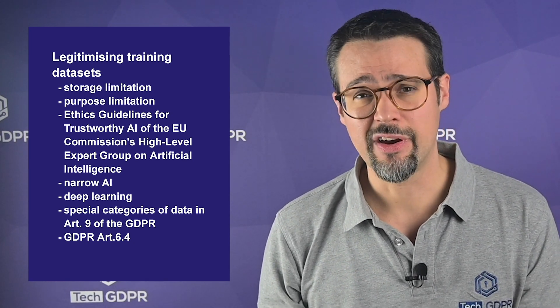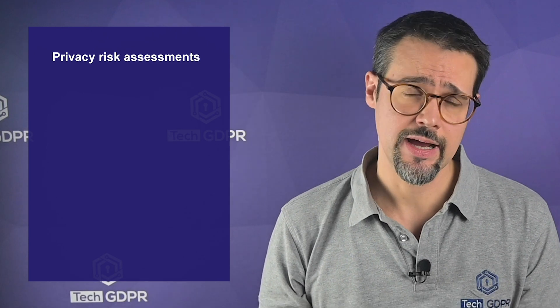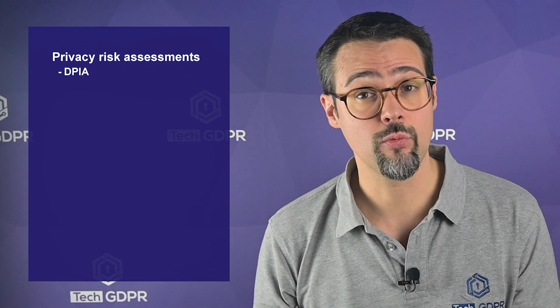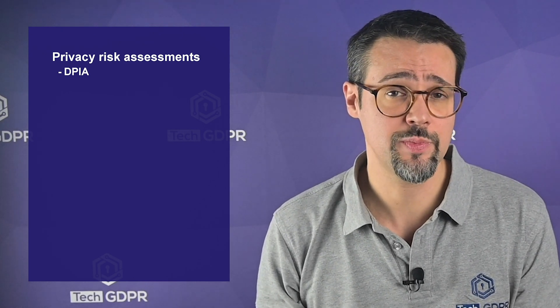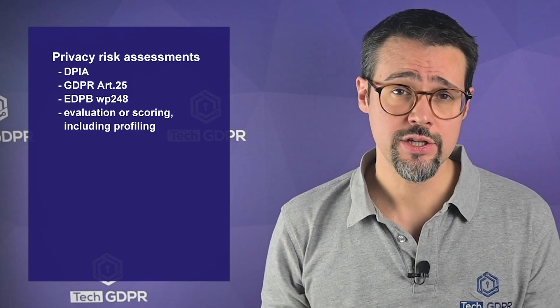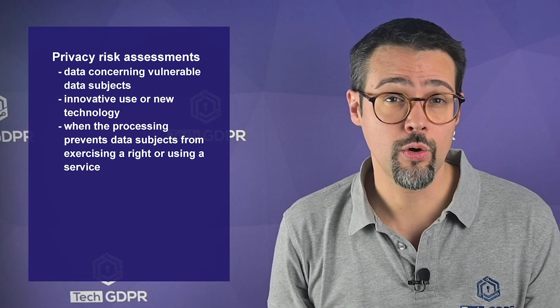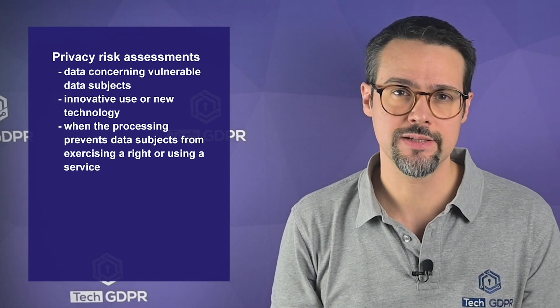Compatibility assessments are likely not the only assessments you'll need to be carrying out. Since AI systems can lead to high risks for data subjects, a data protection impact assessment is likely required as it maps and assesses the risks from data subjects' perspective and helps establish measures to mitigate those risks, as described in article 25 of the GDPR. Per guidelines from the EDPB Working Party 248, a DPIA is required when two of these nine conditions are met: evaluation or scoring including profiling; automated decision making; systematic monitoring; sensitive data or data of a highly personal nature; data processed on a large scale; the matching or combining of data sets; data concerning vulnerable data subjects; the innovative use of new technology; or when the processing prevents data subjects from exercising their rights or using a service.